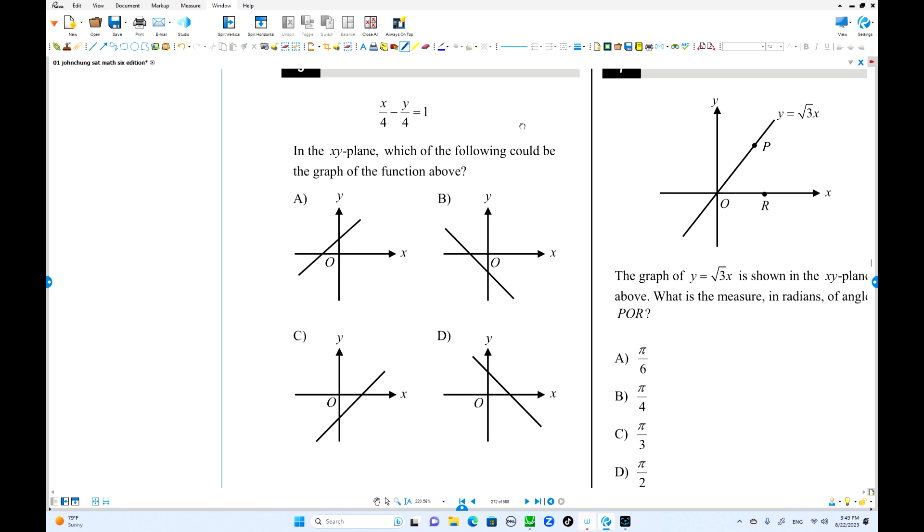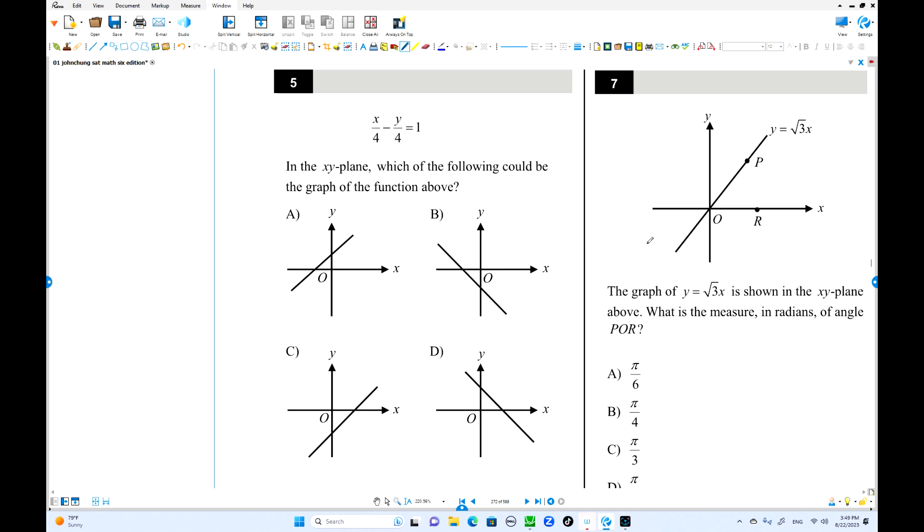Number 5. x over 4 minus y over 4 equals 1. Which of the following could be graph of the function? This is a kind of intercept form. Change this one. x over 4 plus y over negative 4 equals 1. This is x intercept 4. y intercept is negative 4. Which one is x intercept is 4 and y intercept is negative 4? This is 4. This is negative 4. Yeah, that's the answer.